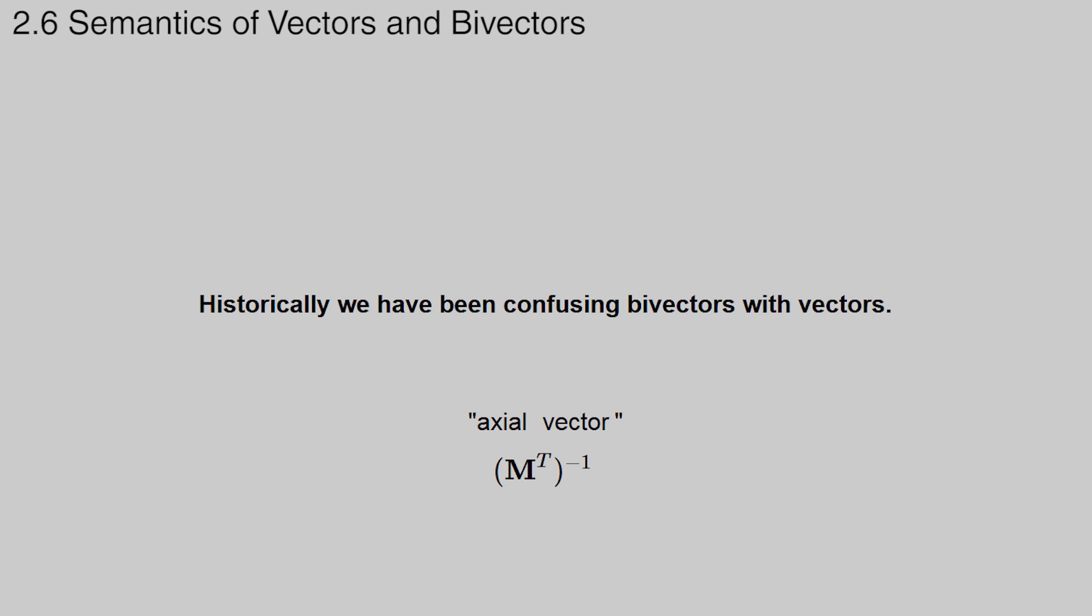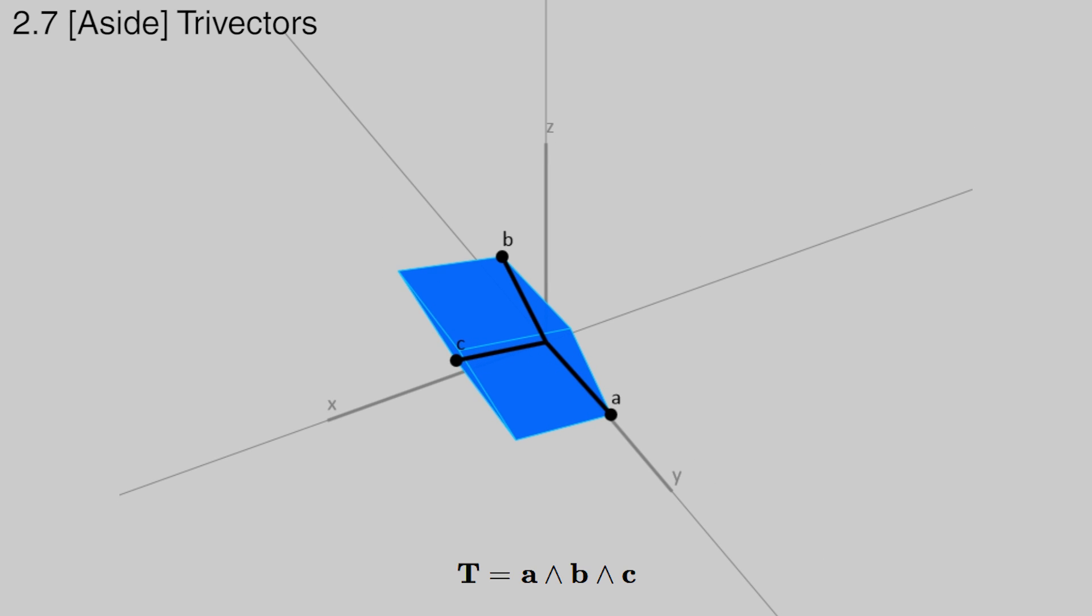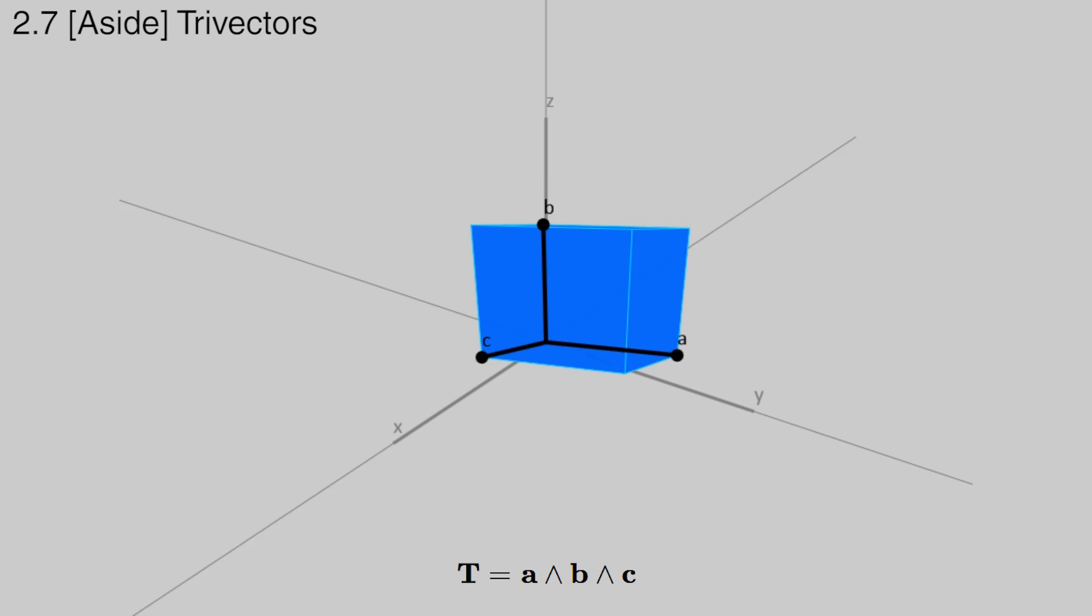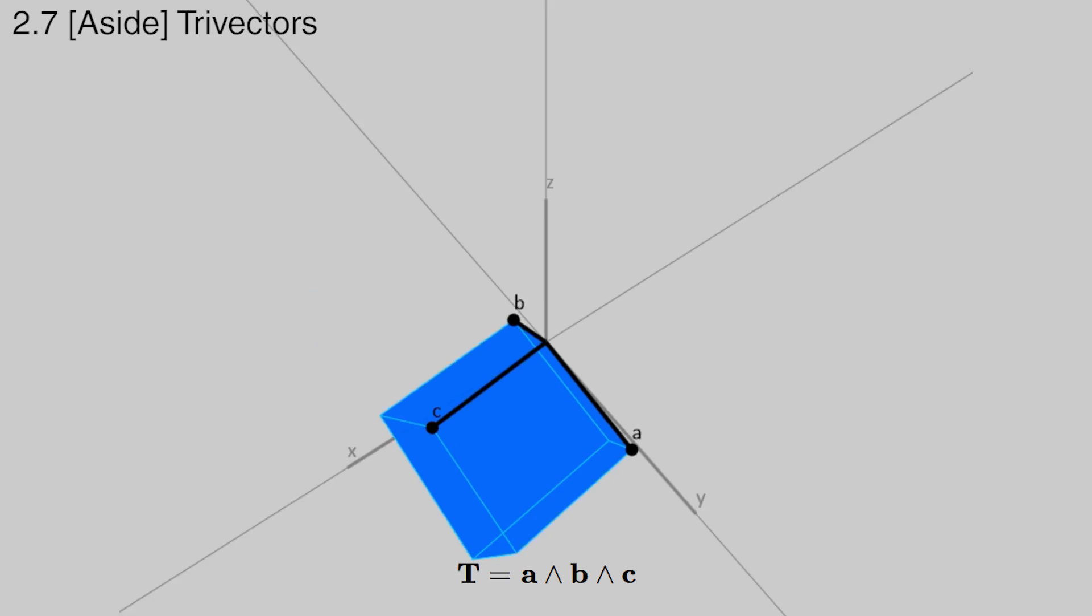In physics, there's a hack called an axial vector, which has been introduced to differentiate vectors that come from cross product from regular vectors. Bivector is the actual type of the object, and it should be thought of and manipulated as such.